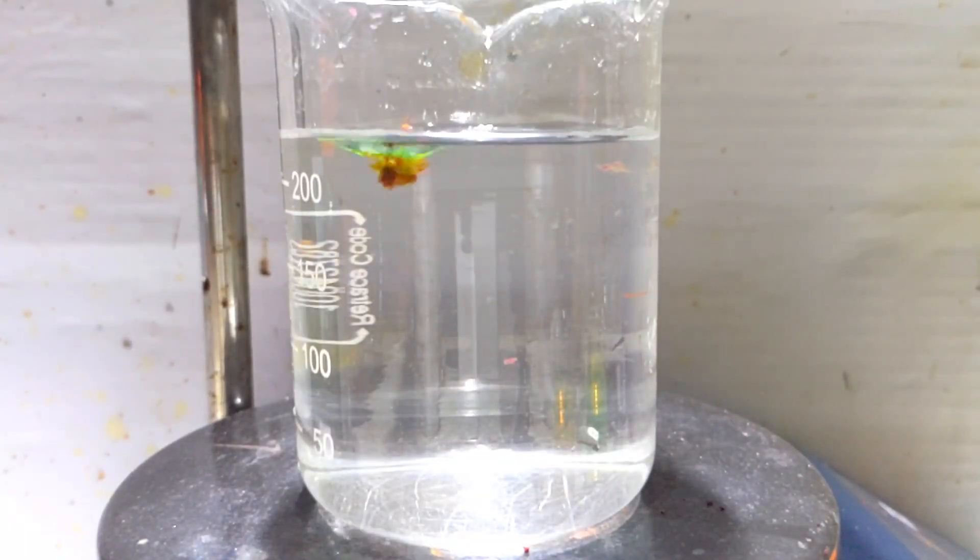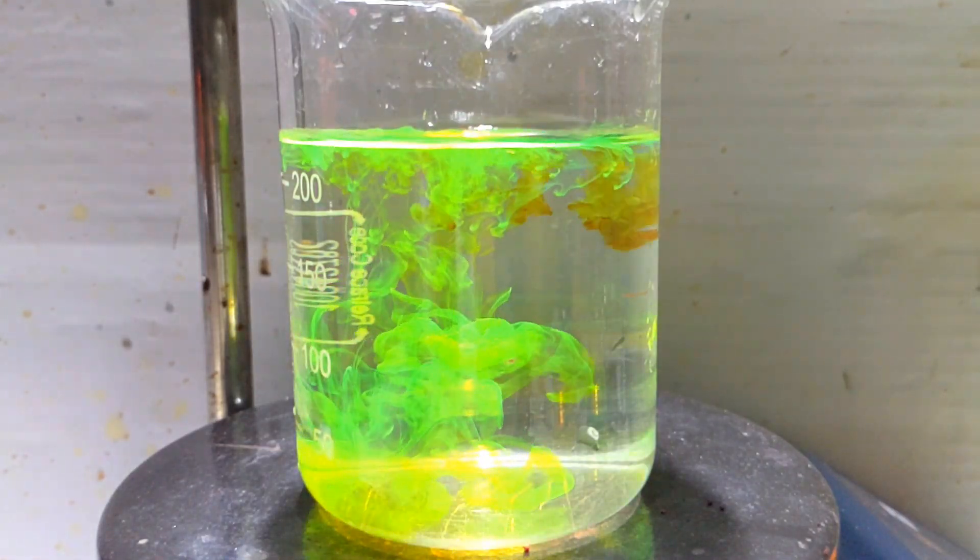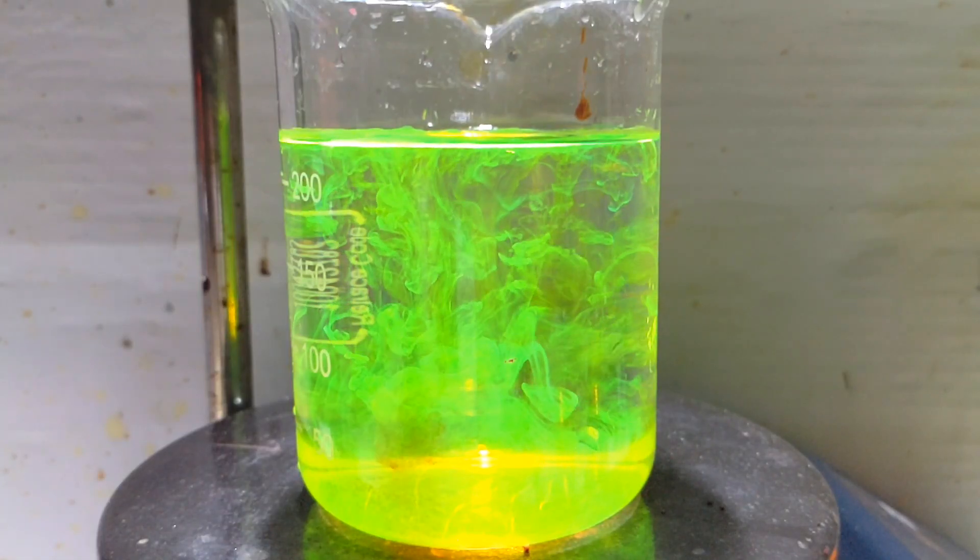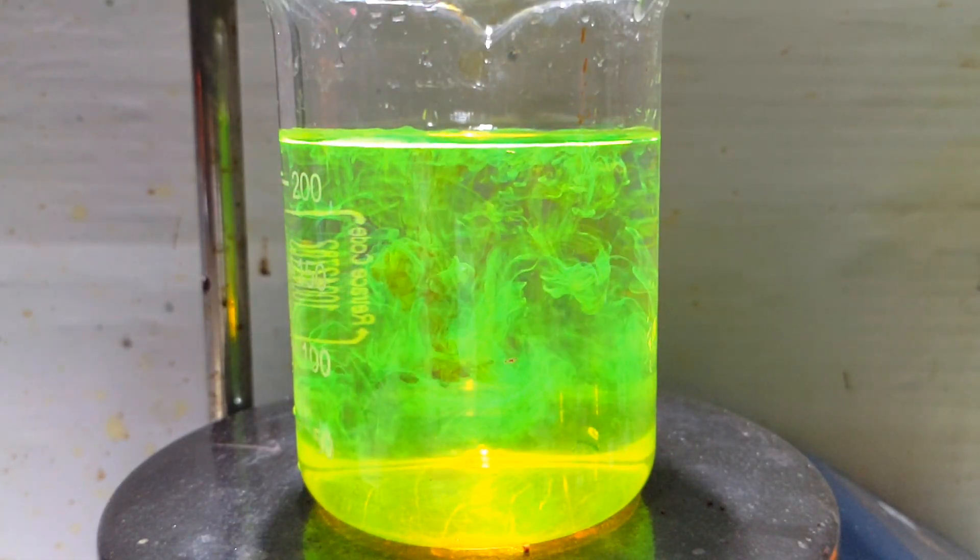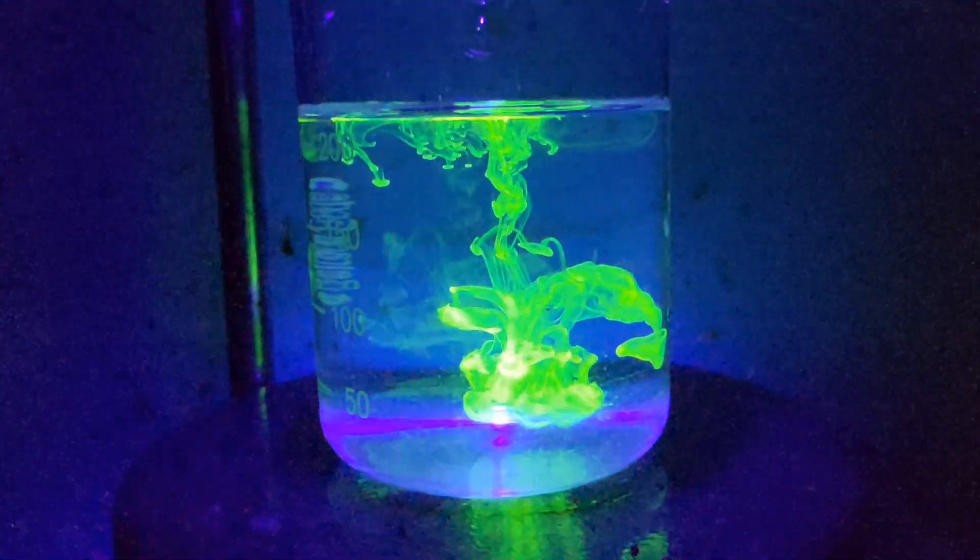A 250 milliliter beaker with water was taken and the concentrated fluorescein solution was added into it. This is the beautiful fluorescence that you observe in the presence of direct light. In the presence of UV light you get an all new variety of experience.